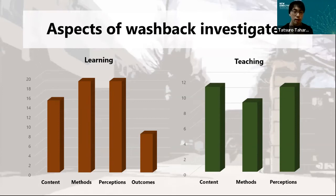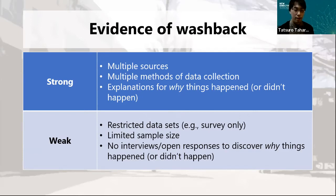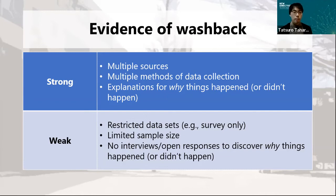About the aspects of washback, there are no specific features that distinguish learning and teaching between content, method, perception, and outcomes. Regarding the evidence of washback, studies that demonstrate strong evidence of washback typically include multiple sources, multiple methods of data collection, and explanations for why things happened or didn't happen. On the other hand, studies that failed to provide washback evidence or provided only very weak evidence typically had very restricted data sets, a limited sample size, or no interviews or open responses to discover why things happened or didn't happen.